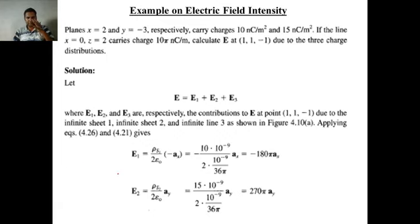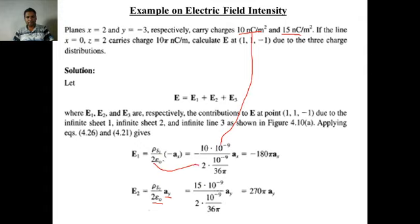Substituting rho_s1 and using epsilon_0 equal to 10 raised to minus 9 divided by 36 pi — which saves computation time — the result for E1-bar is minus 180 pi a_x cap. For E2-bar, the result is 270 pi a_y cap. Now the question is: why did we use minus a_x cap for E1-bar, and why a_y cap for E2-bar?